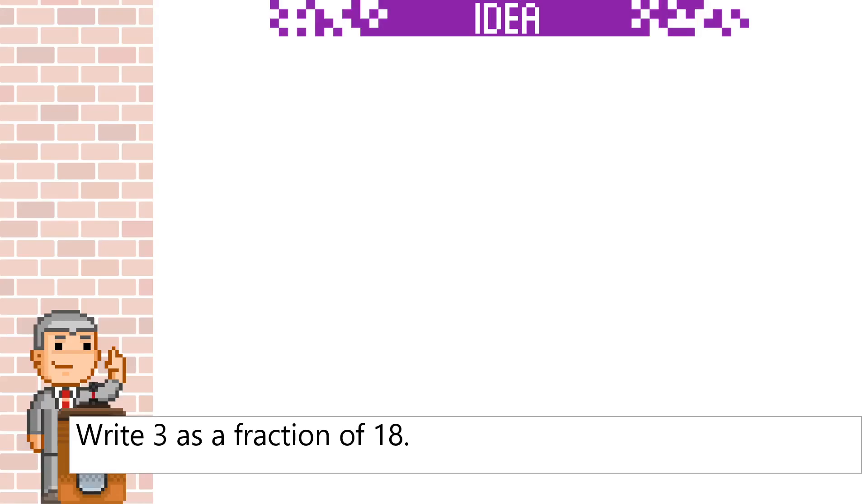To write 3 as a fraction of 18, we can draw 18 squares. 3 of these squares will be shaded. The fraction will be 3 over 18.